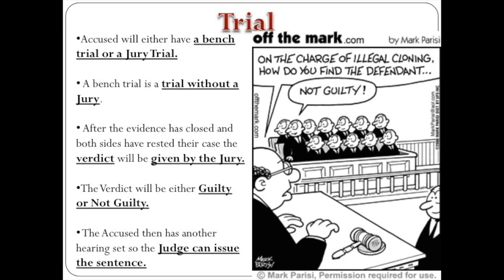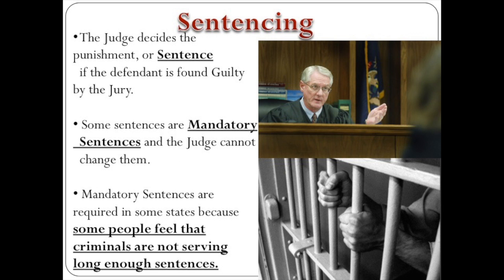After a plea of not guilty is entered, the accused would then go to a bench trial or a jury trial. A bench trial is when it's a trial without a jury and the judge hears the evidence and makes a decision. A jury trial is where members of peers come in, hear the evidence, and make their decision. After evidence is closed and both sides have rested their cases, the verdict will be given by the jury — either guilty or not guilty. The accused then has another hearing set so the judge can issue a sentence or punishment. If a guilty verdict was reached, sentencing would occur. The judge decides the punishment if the defendant is found guilty. Some sentences are mandatory and the judge cannot change them, as some people feel that criminals are not serving long enough sentences.